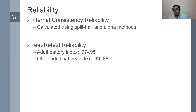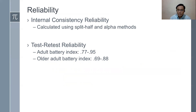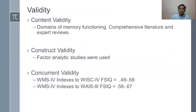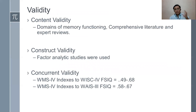Regarding reliability of WMS 4, it has internal consistency reliability assessed using split-half and alpha methods, and test-retest reliability. For the adult battery: 0.77 to 0.95. For the older adult battery index: 0.69 to 0.88. For validity, it underwent content validity with memory functioning, comprehensive literature, and expert reviews. Compared to older versions, establishing content validity was difficult because there was not yet well-established literature defining memory and its components.